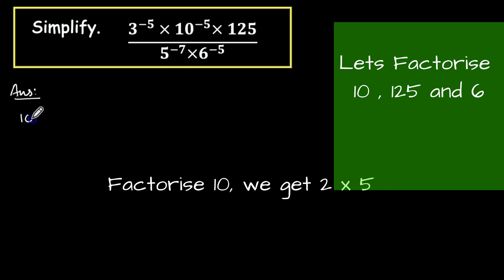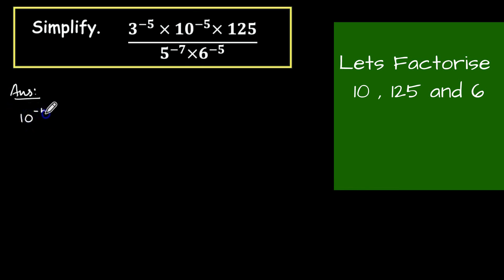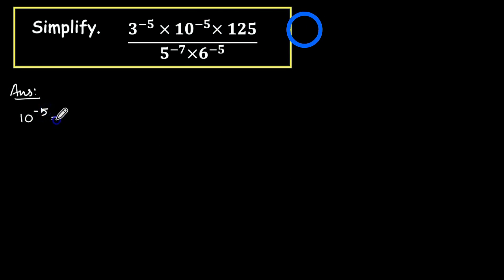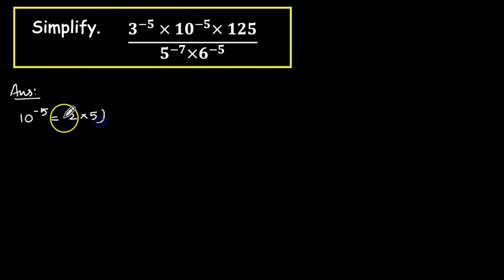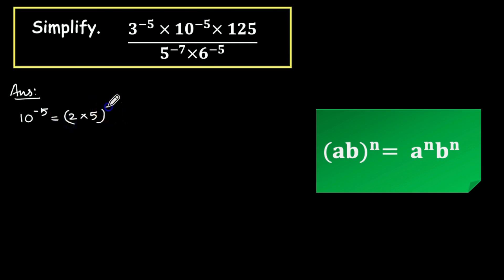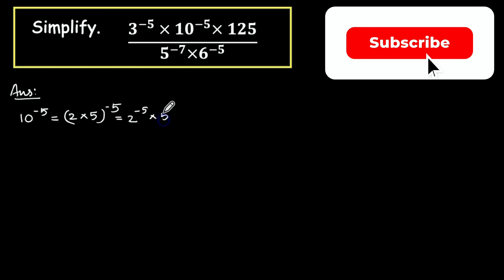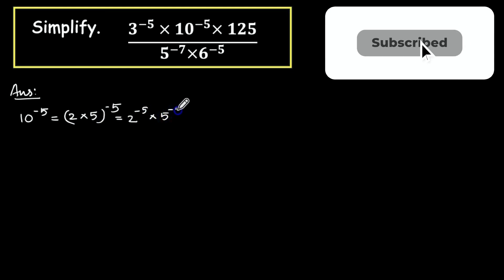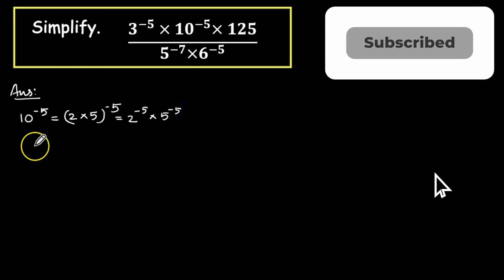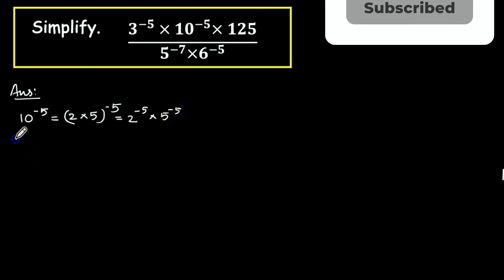Let us factorize 10 raise to minus 5, which equals 2 into 5 the whole raise to minus 5, which is equals to 2 to the power minus 5 into 5 raise to minus 5.